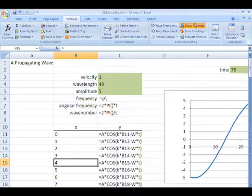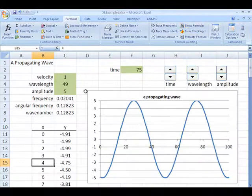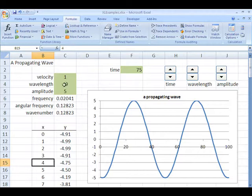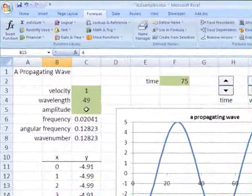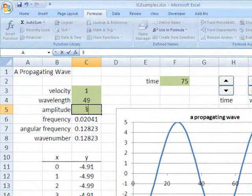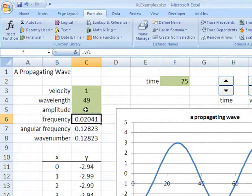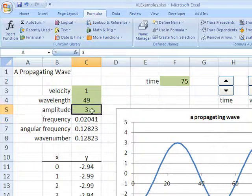So turning off the formulas, so we can see that when we change the value of, say, the amplitude - I'll make the amplitude here 3 - everything in the y column gets updated because A, the amplitude, was changed and it re-evaluates all those formulas.